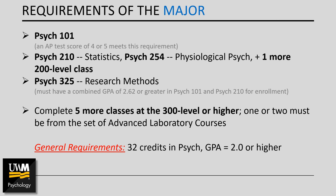Please note that if you're a transfer student, this GPA is calculated twice — once based on grades from all of your psychology classes, both the transfer credits and credits from UWM, and again based only on your psychology classes from UWM.